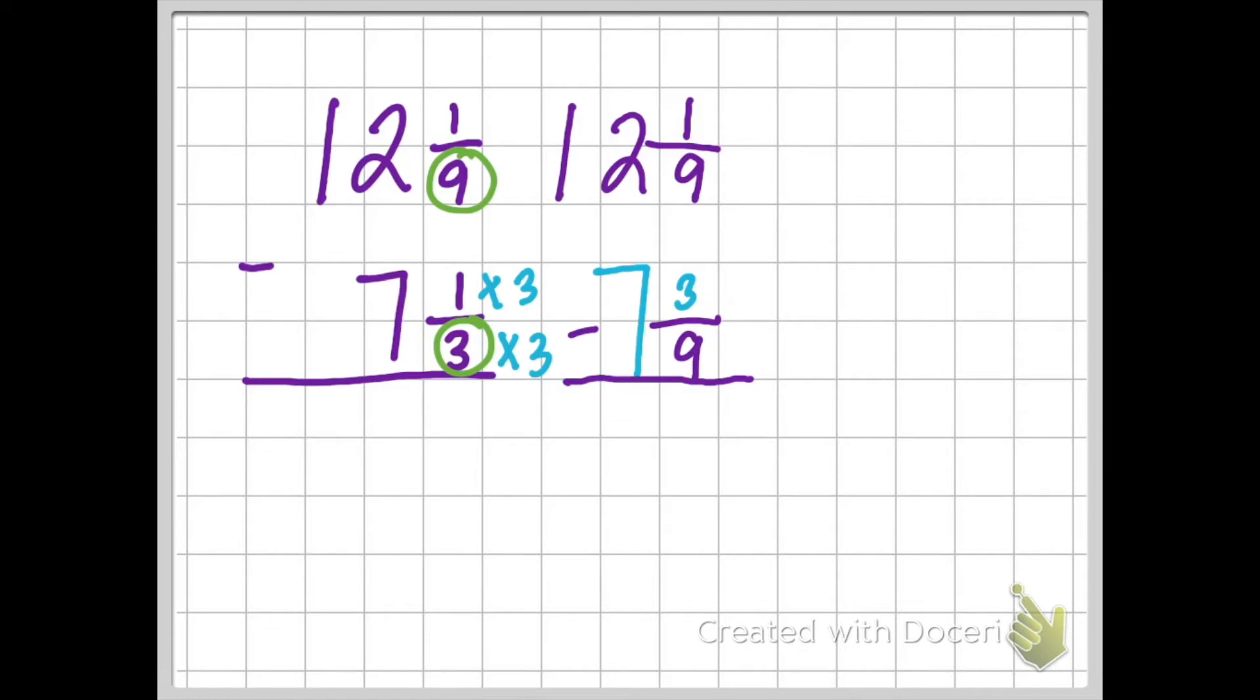I'm going to stop for a second. This is our new subtraction problem: 12 and 1/9 minus 7 and 3/9. Can you see the problem? Can you figure out what could be a roadblock right now for me subtracting? I hope you found it. Right now, I'm realizing that when I subtract, I'm going to try to take 3 from 1. Well, if I subtract 3 from 1, I end up with a negative 2. And again, we're not working with negative numbers in fifth grade. So I want to make sure that my number is a positive 1. In order to do this, you guessed it, I've got to borrow and regroup.